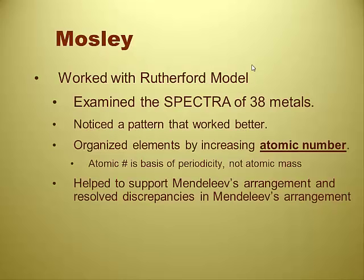He realized that the number of protons was a better way of organizing the elements in order. We've got protons by now because this is 50 years later than Mendeleev. Rutherford had already discovered the protons, and they actually knew how many protons were in each atom. So he developed an idea and called it the atomic number, which was based on the number of protons. He basically used Rutherford's work to say atomic numbers are equal to the number of protons, and we're going to rearrange the periodic table based on atomic number, which makes it nice and sequential.